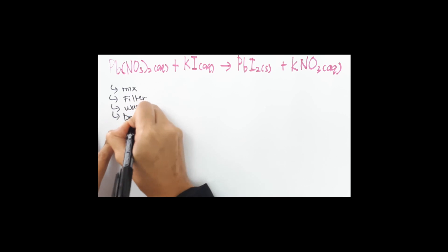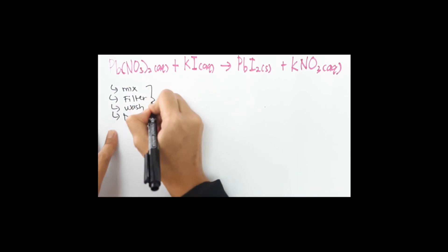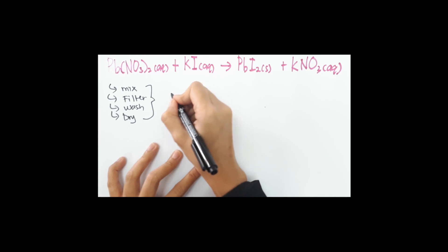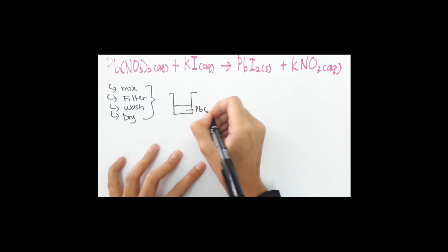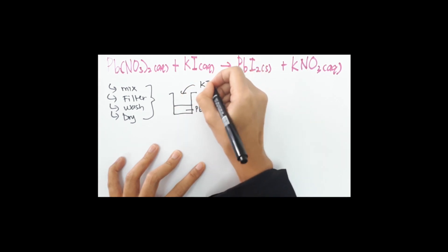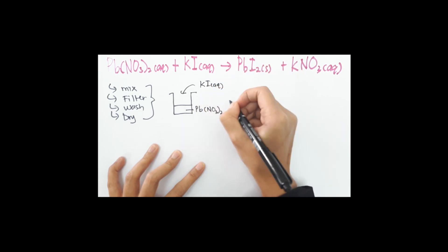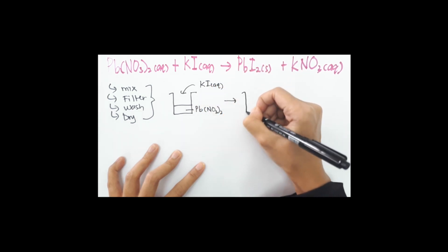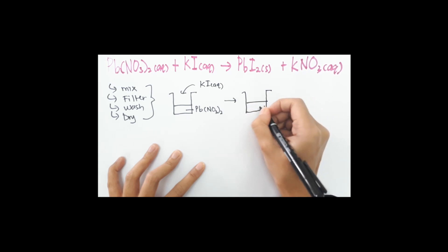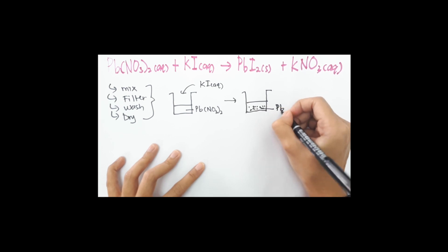Let's look at these four steps in detail. First, you need to mix lead nitrate with potassium iodide. Instantaneously, you're going to get a mixture of solution and precipitate. The precipitate is your lead iodide, which is our insoluble salt, and the solution will be potassium nitrate.